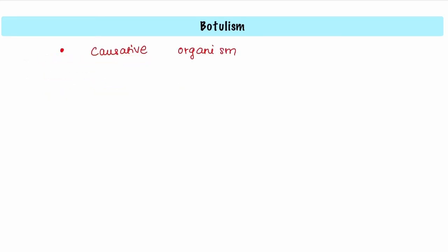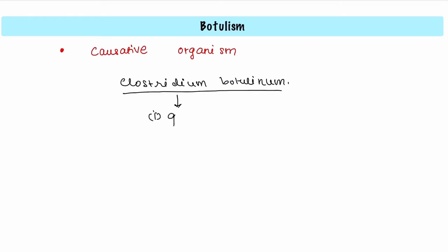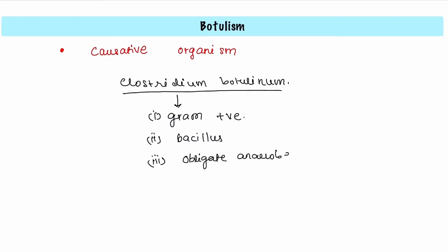The causative organism of botulism is Clostridium botulinum. This organism is first of all gram positive, which means that whenever you stain it with the gram stain it will appear purple in color. Secondly, the shape is rod shaped, so it is called bacillus. The third characteristic is it is an obligate anaerobe.